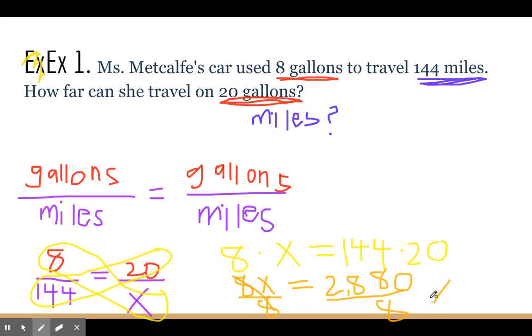And we get X equals 360. And since it's a word problem, we want to put the unit we're using. So we found how many miles it takes for my car to travel on 20 gallons, so we have 360 miles. That's the missing unit, there's my answer. And that was solving proportion word problems.